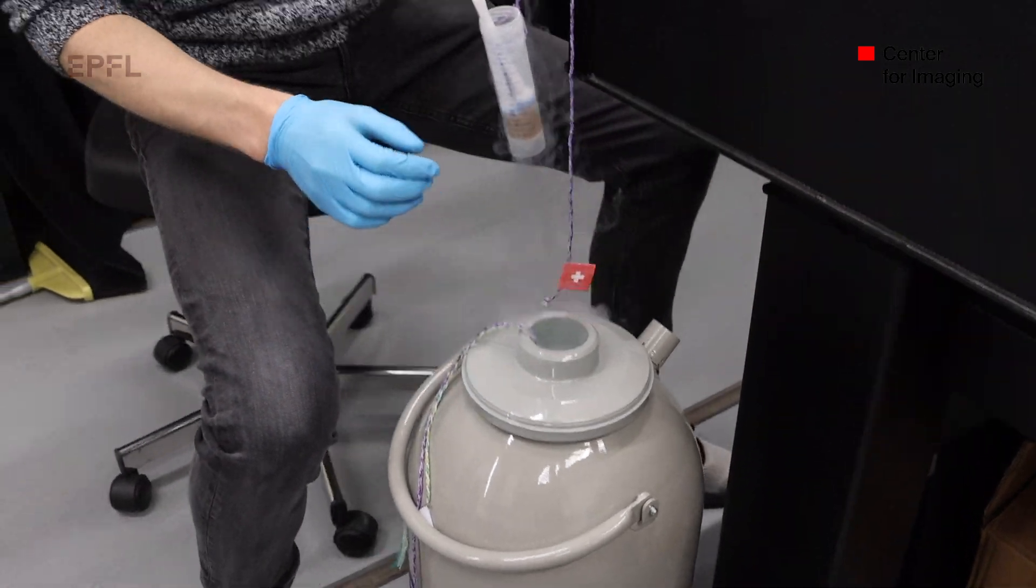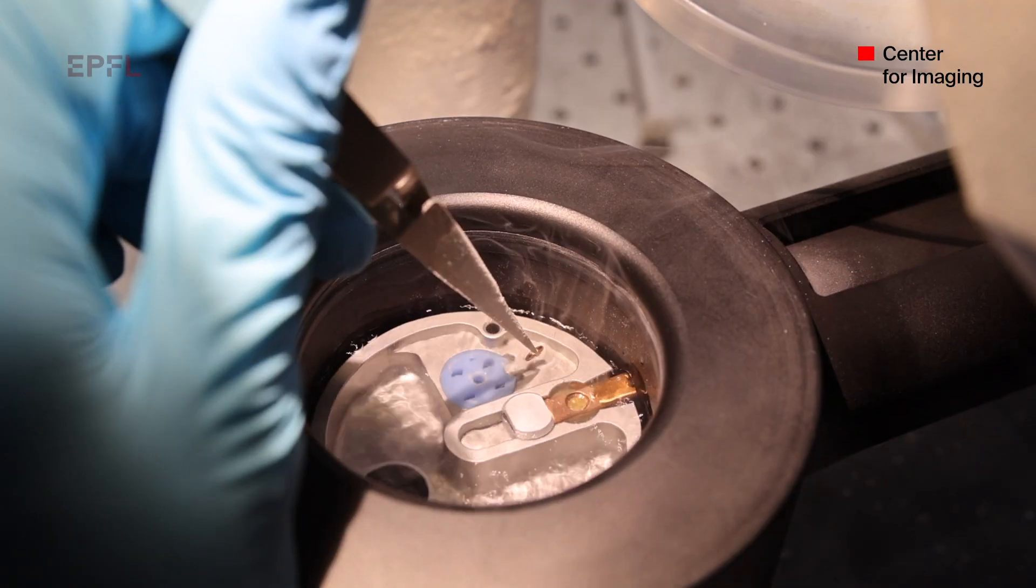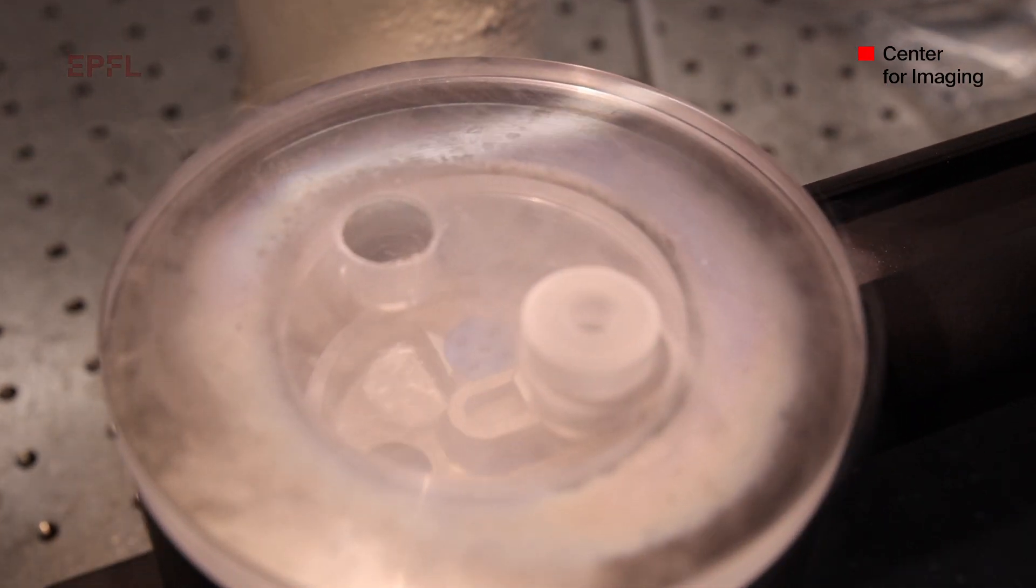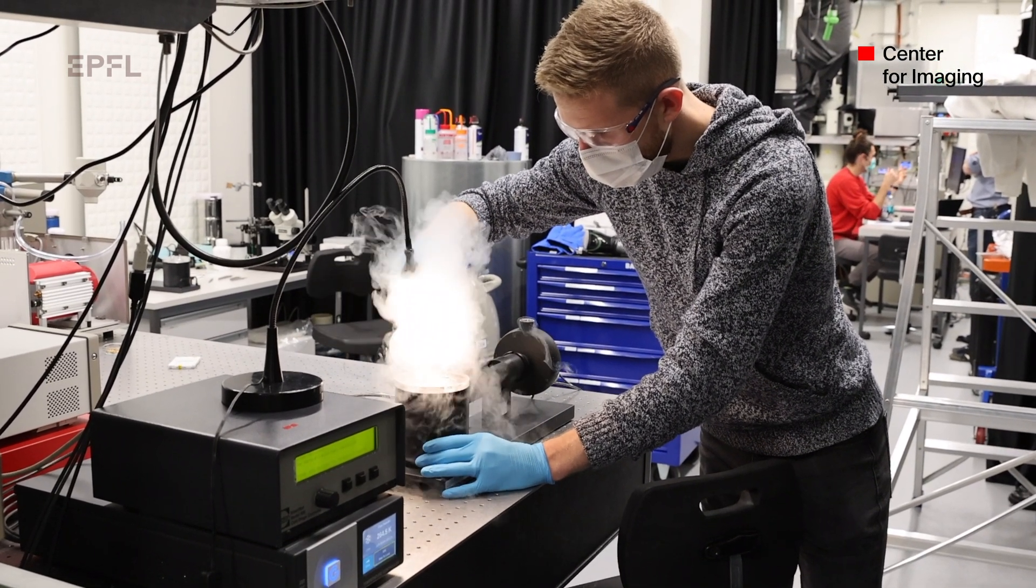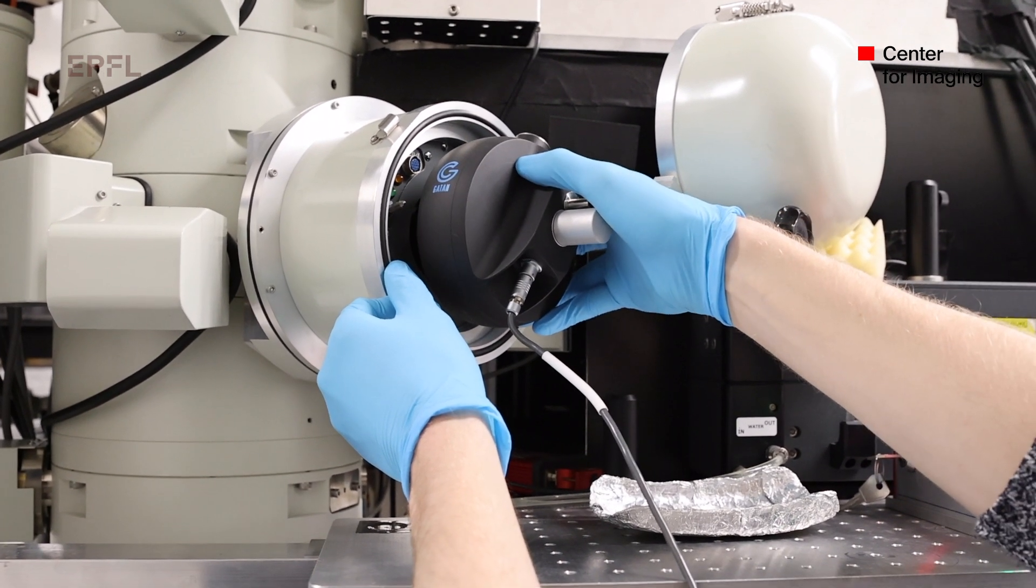Over the years, people have developed a number of ways to obtain structures of proteins. One of these techniques is cryoelectron microscopy. In simple terms, you take a very thin film of water with your proteins in it and plunge this sample into a cryogen. This way you freeze your sample very rapidly, which allows you to load the sample into a transmission electron microscope and record images of your protein.